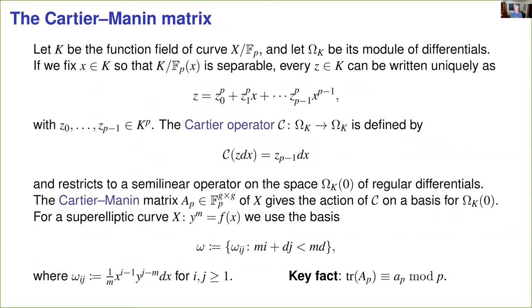So, to compute the trace of Frobenius of a superelliptic curve, our strategy is to compute it as the trace of a certain matrix over fp. That matrix is the Cartier-Manin matrix, which can be defined as follows. We take the function field of our curve, it has a corresponding module of differentials, and we fix a separating element so that we can view the function field as a separable extension of the rational function field over fp. There's then a canonical way to write every element of our function field, canonical once we've chosen our separating element x. And this allows us to define the Cartier operator. We take the last coefficient, the z_{p-1} coefficient that appears in the unique representation of our function z, and we take the corresponding differential. One can also define the Cartier operator axiomatically in terms of properties it satisfies.